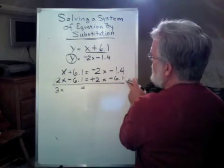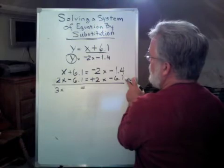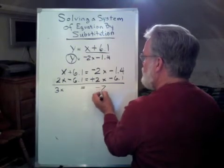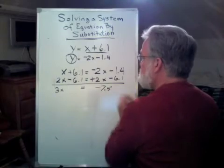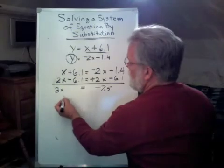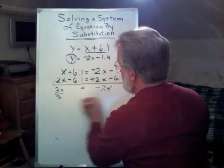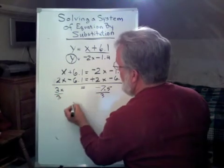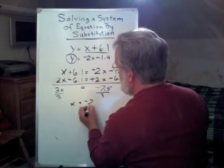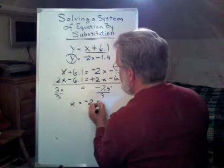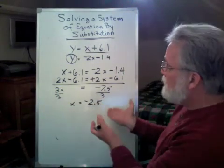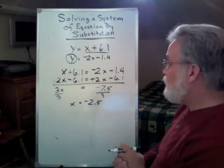Now I want to solve for x, so I divide both sides by 3, and I get that x equals negative 2.5. No hocus pocus, no smoke and mirrors. There it is. x equals negative 2.5.